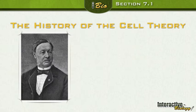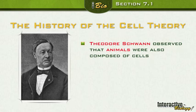The next and final person in this section is Theodore Schwann. He observed that all animals were also composed of cells. A swan is an animal, and it kind of sounds like his last name — Theodore Schwann. All animals are composed of cells. That's an easy way to remember it.